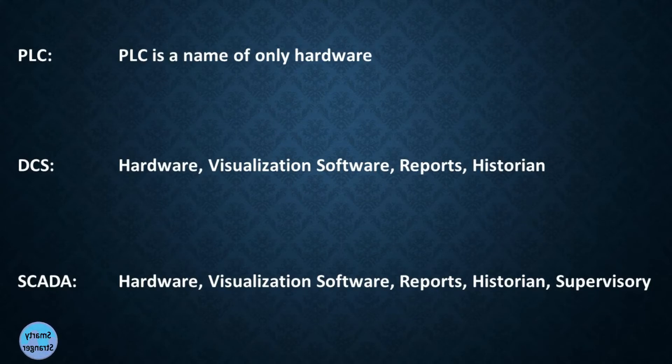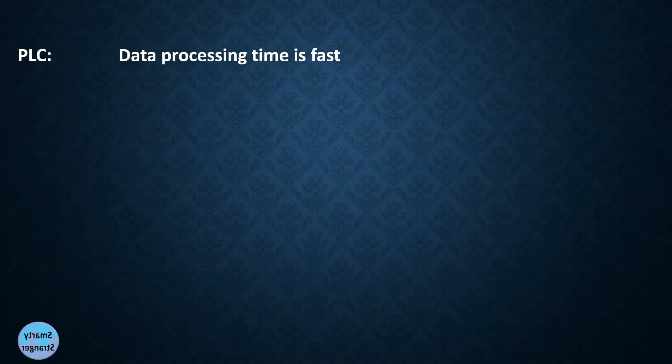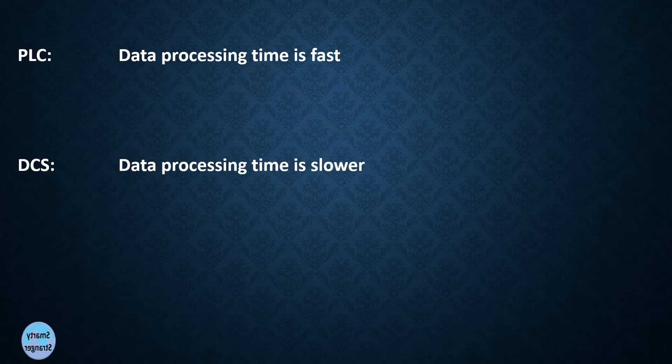Data processing time of PLC is fast. Data processing time of DCS is slower. Data processing time of SCADA is fast.